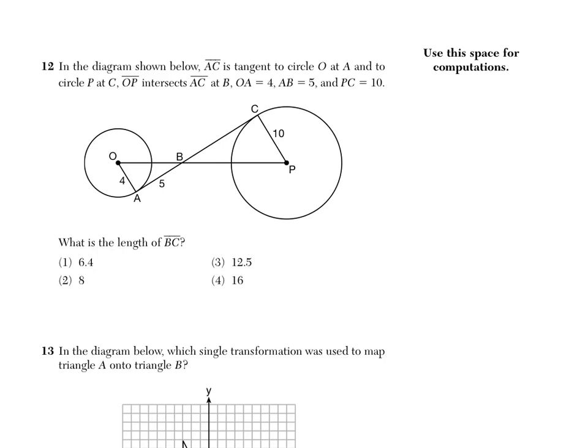AC is tangent to circle O at A and to circle P at C. So that immediately tells us something. If we have a tangent meeting a radius, tangent and a radius is always perpendicular. So here we have right angles at C and at A.